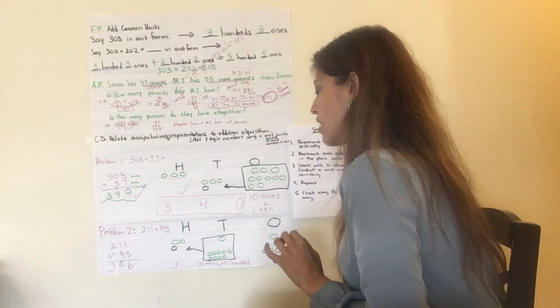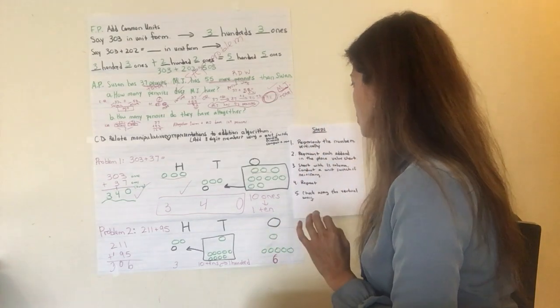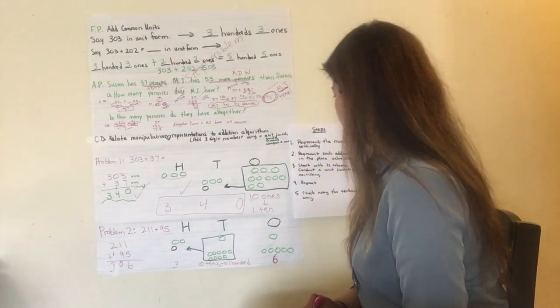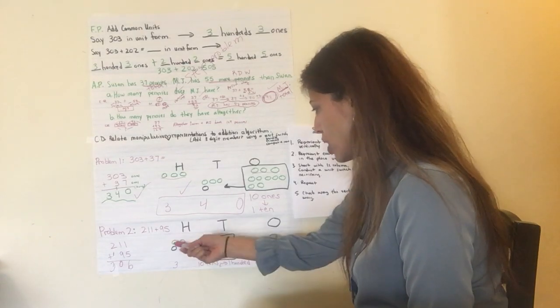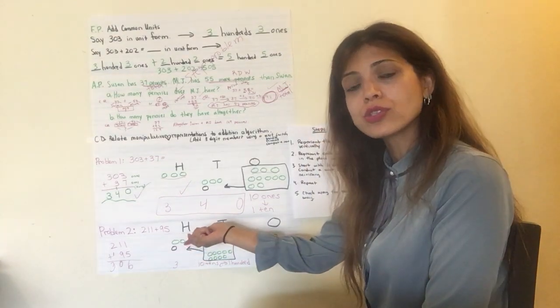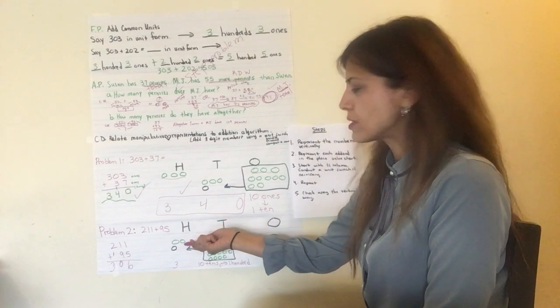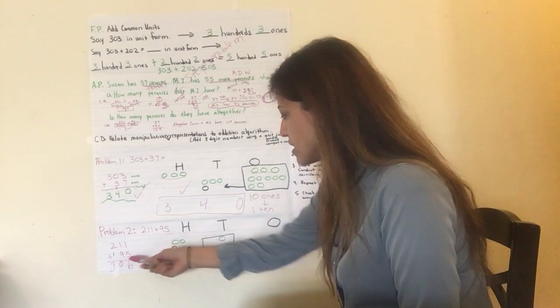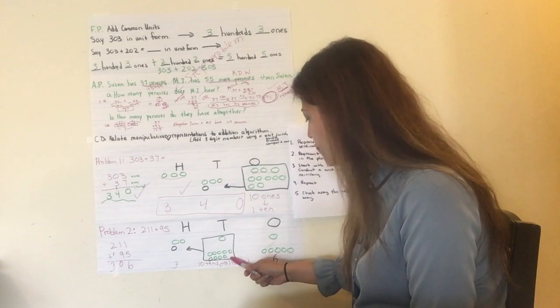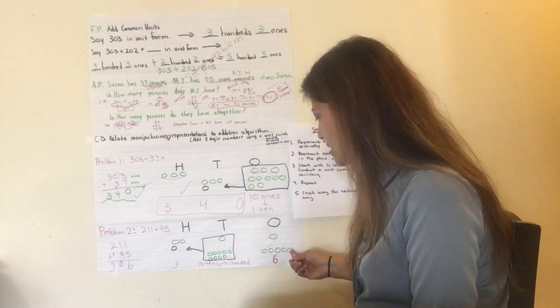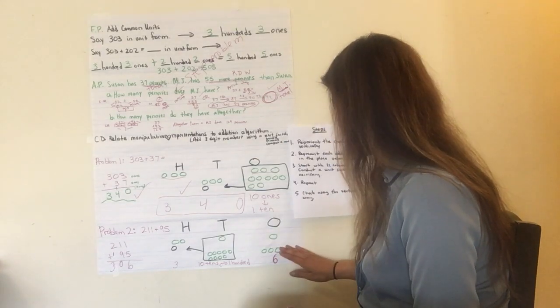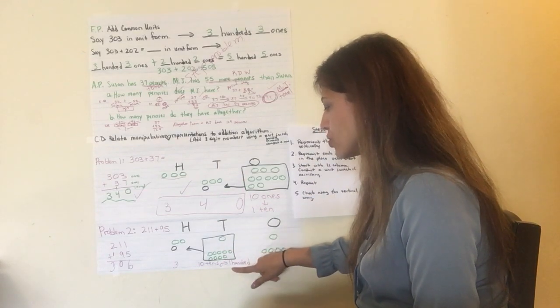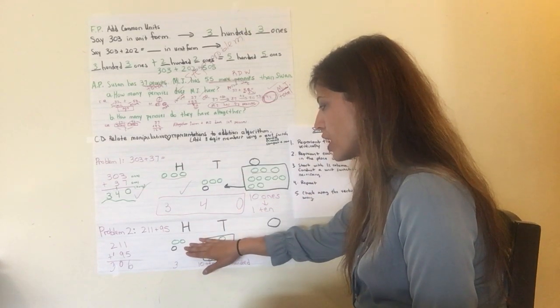211 plus 95. 211 plus 95. Let's use the same procedure. Represent the numbers vertically. 211 plus 95. Represent each addend in the place value chart. So, there's 200. Everyone's doing this with me now. So, you're writing this with your paper and pencil. There's a 200. There's a 1 ten. There's a 1 one. Good. Let's represent 95. There's the 90, right? The 9 tens. And then the 5 ones. Good, good work. Now, I'm supposed to start with the ones column. Add it. Conduct the unit switch if necessary. I'm supposed to add the tens column. Add it. Conduct the unit switch if necessary. And then follow the same procedure for the hundreds column.